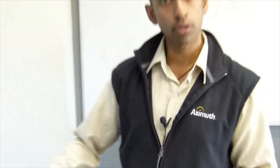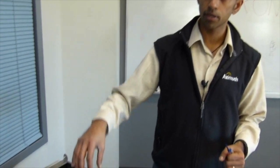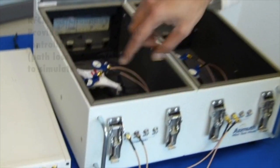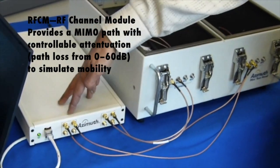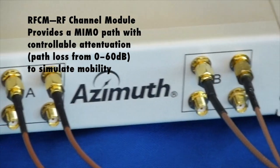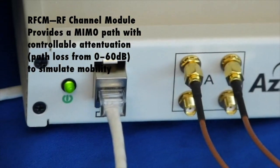So, anyways, coming back to the setup, here what you have is you have a drone controller and a drone, both of them are in independent cavities of shielded enclosure. And both of these, the connection between these two goes to what is called an RF channel module. The RF channel module provides a controllable MIMO path.